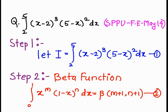Now, if you observe, in equation 1 the lower limit is 2 and upper limit is 5, whereas in the beta formula the limits are 0 to 1. We need to convert the limits and also convert (x minus 2) into x-form. So we need to do a substitution to change the limits to 0 to 1.